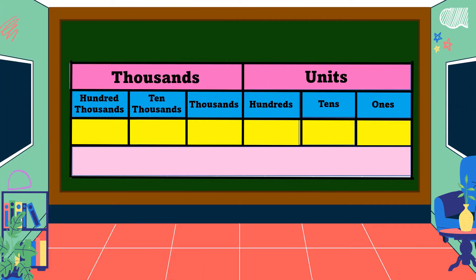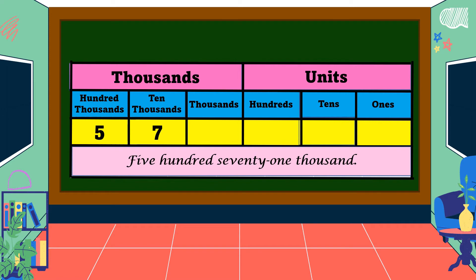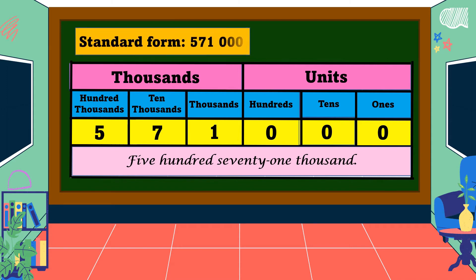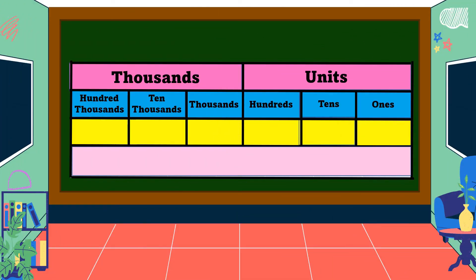Our next example is converting from a number word to standard form. For 571 thousand, we put the digits in our table: 571 goes in the thousands period, and since there are no units, we put zero in every units place value. So 571 thousand in standard form is 571,000.